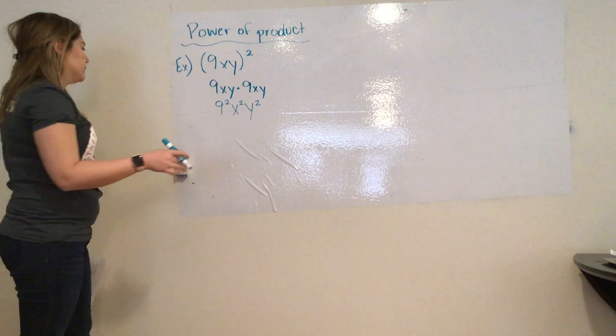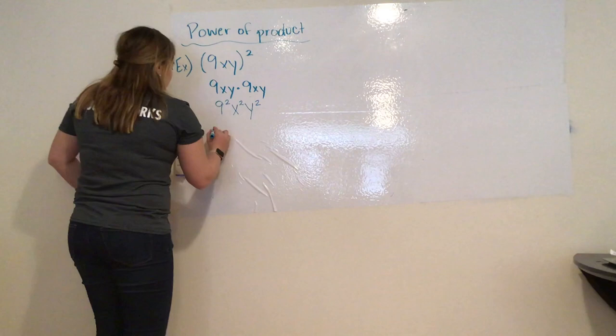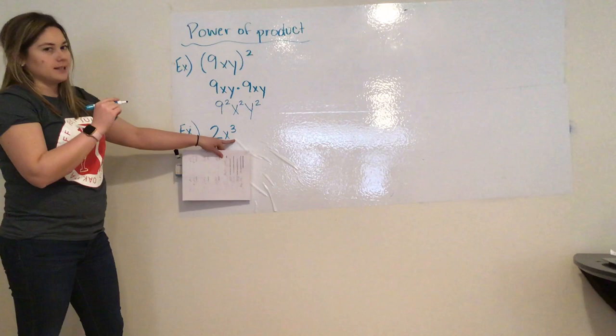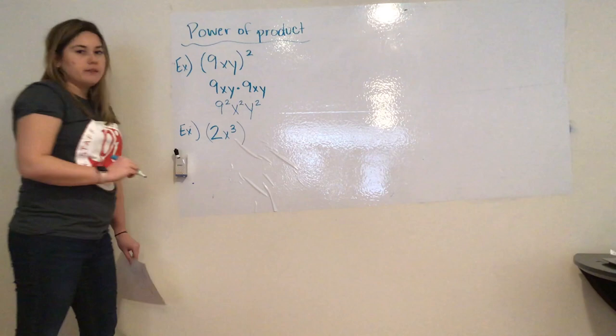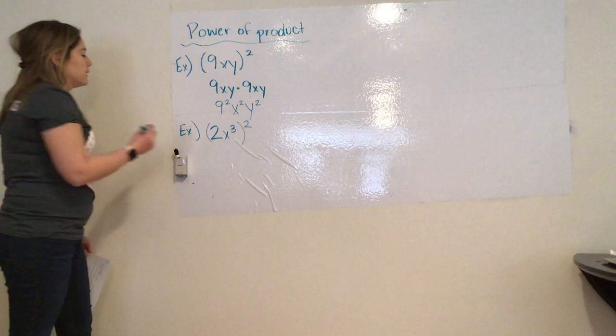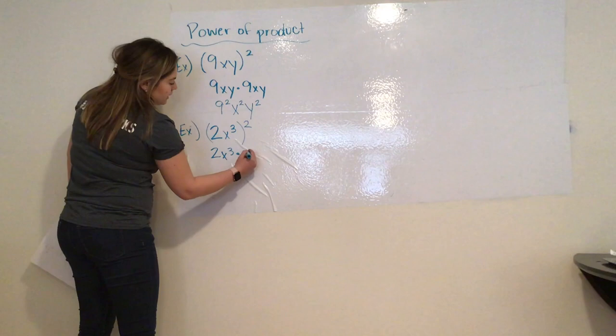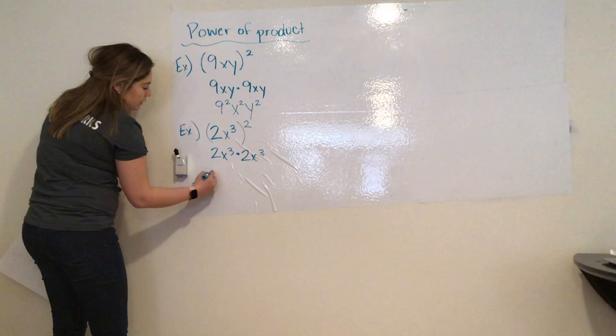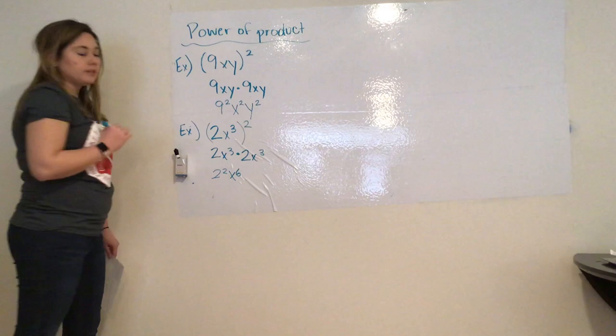The second example is 2x to the power of 3. I know it says on your note catcher, it looks like it goes 3 next to it, it's to the power of 3. All of this is being raised to the power of 2. Same thing here, I'm going to expand it. So, 2x to the third, times itself. So, now we can see, I really have 2 to the second, and x to the sixth.